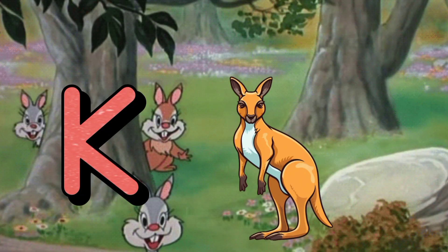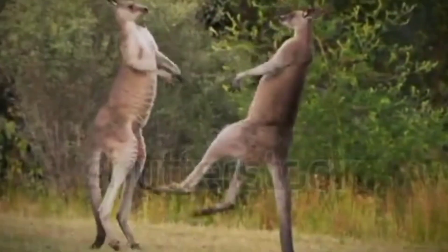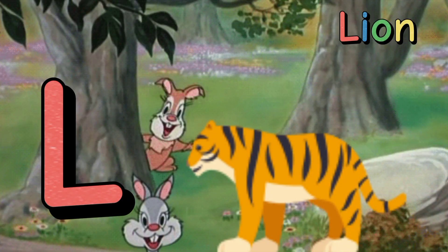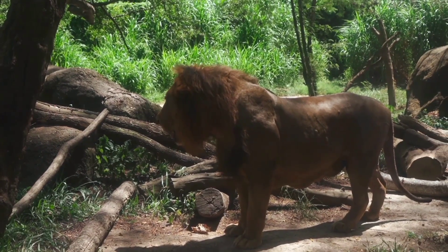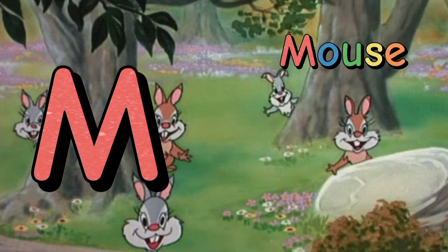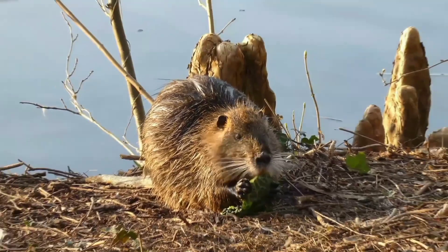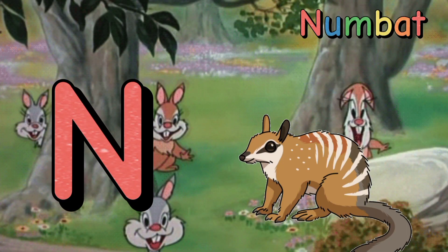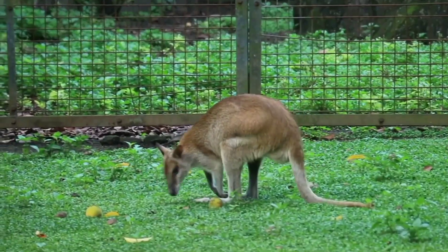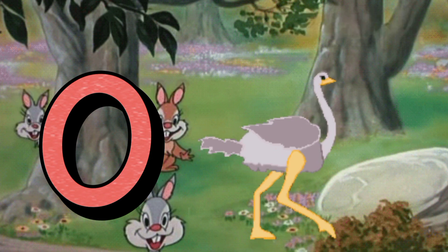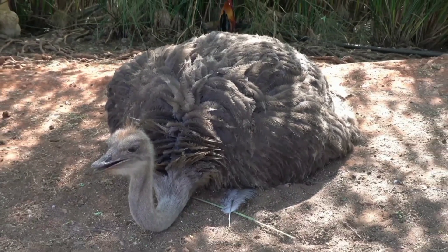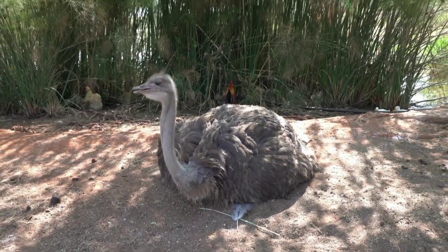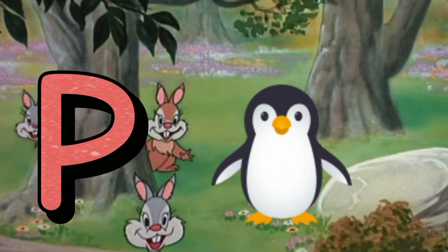K is for kangaroo, k-k-kangaroo. L is for lion, l-l-lion. L is for lion, l-l-lion. M is for moose, m-m-moose. M is for moose, m-m-moose. N is for newt, n-n-newt. O is for ostrich, o-o-ostrich. O is for ostrich, o-o-ostrich. P is for penguin, p-p-penguin.